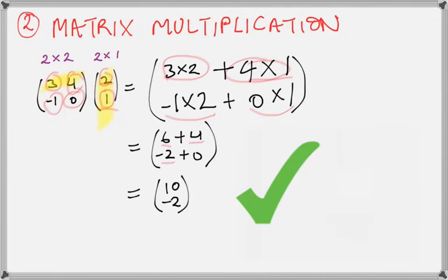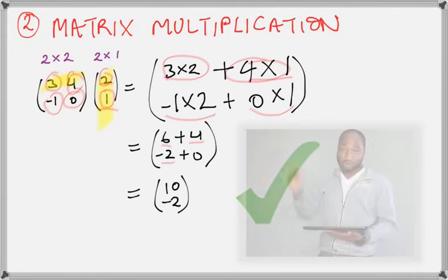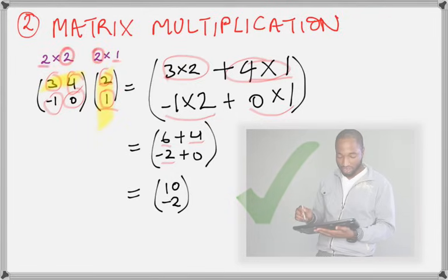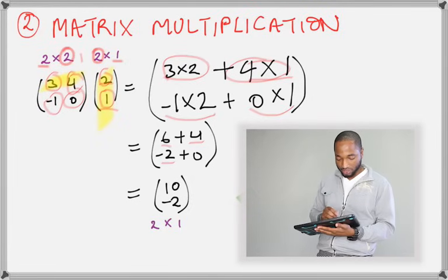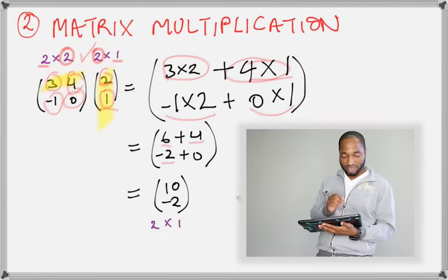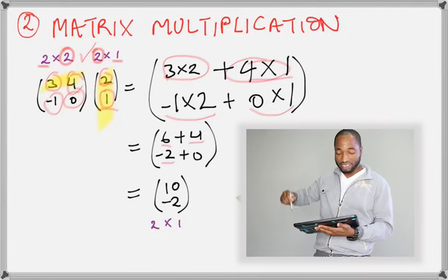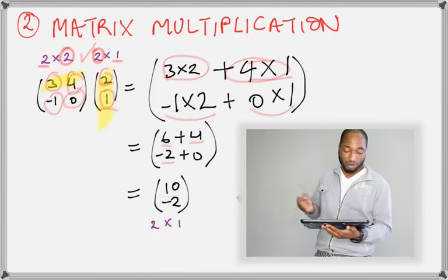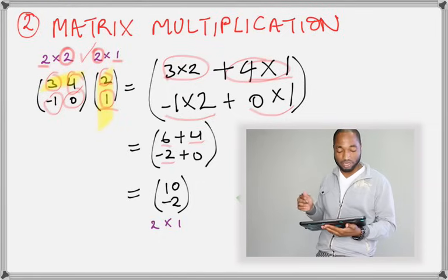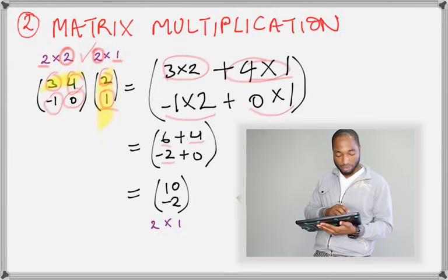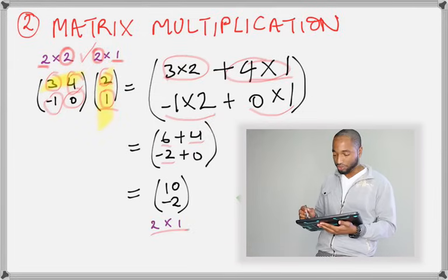Let's look at another style. There are some things you should know that guide you in matrix multiplication. First, know the size of the matrices. The first one was a two by two and the second was a two by one. Matrix multiplication is only possible if the two numbers on the inside are the same — meaning the number of columns in the first matrix must equal the number of rows in the second matrix. And the final answer matrix is given by the numbers on the outside: a two by one result.